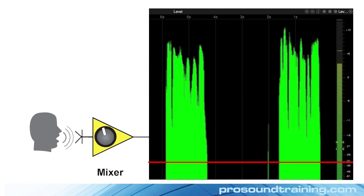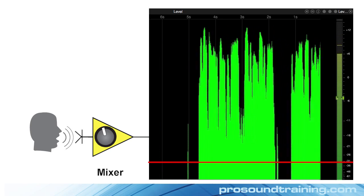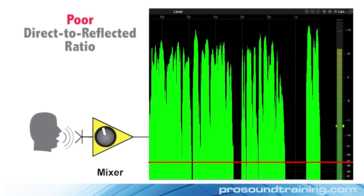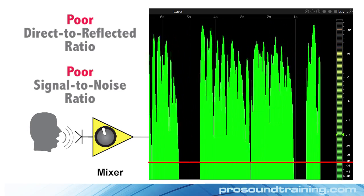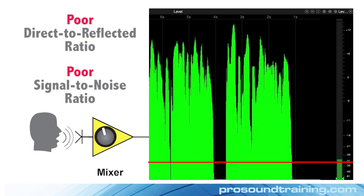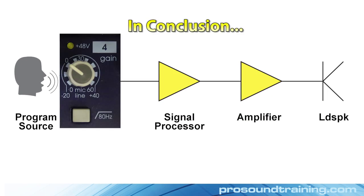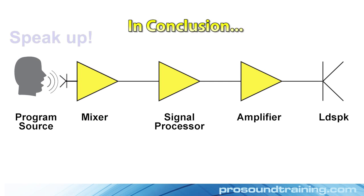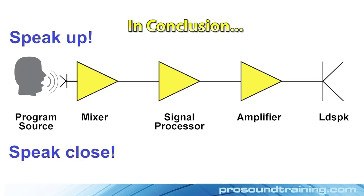This demonstrates that garbage in means garbage out. If you want optimal sound from your system, you've got to work on the signal being picked up by the microphone. Poor direct-to-reflected ratio and poor signal-to-noise ratio cannot be corrected later in the signal chain. Setting the input gain is a critical part of the system gain structure process and should only be done once the microphone is being used properly. Add just enough gain to get to line level. Once it is set, there's no reason to change it unless there's a change in how the talker is using the microphone. Most importantly: speak up and speak close. Your overall signal-to-noise ratio will be no better than what you achieve at the source.